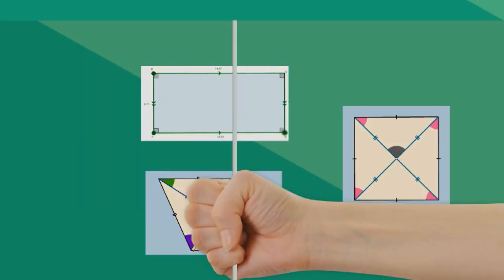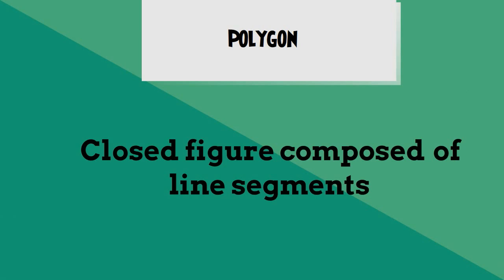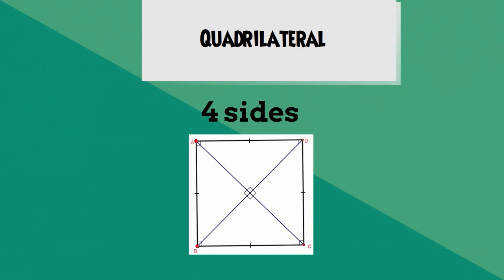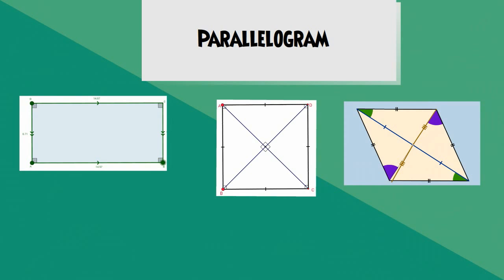Each of these shapes are considered to be a polygon, which is a closed figure composed of line segments. They also are considered to be quadrilaterals, which means they each have four sides. They also are all parallelograms, which means they have opposite sides that are parallel.